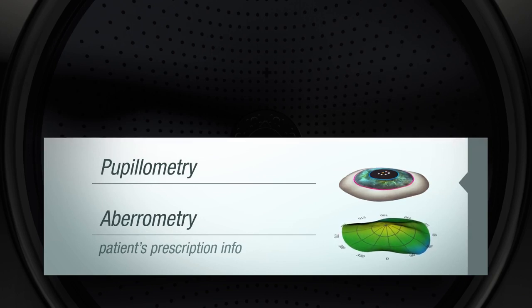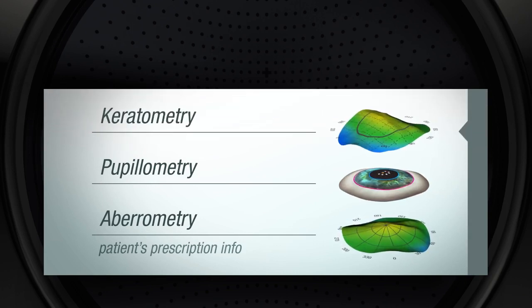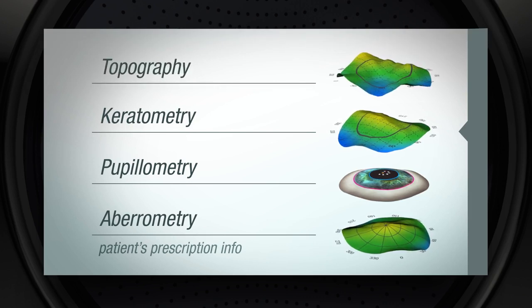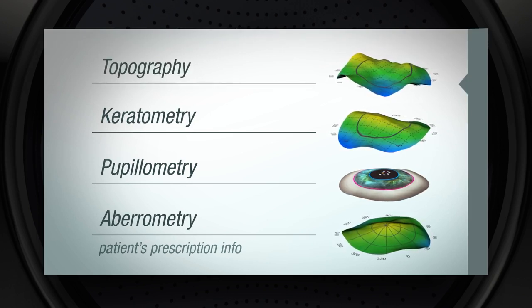It also measures curvature of the cornea called keratometry, and the overall topography or shape of the front of the eye. All of these measurements are mapped by the iDesign system in mere seconds and in a single sitting.